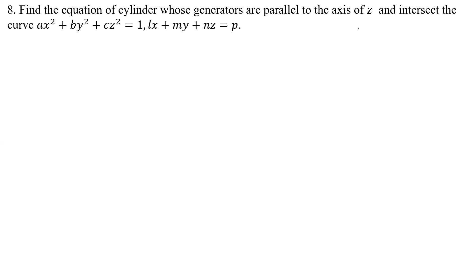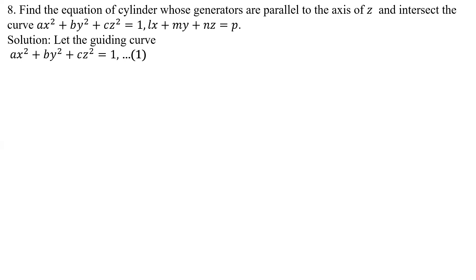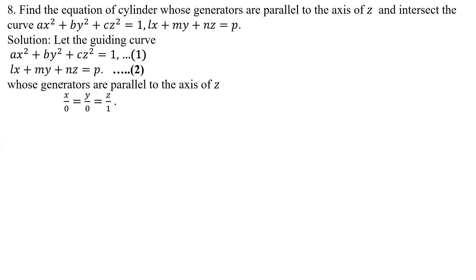In the previous problem, direction ratios were given. Here, the generators are parallel to the axis of z, which means the direction ratios (DR) are 0, 0, 1. The generators intersect the curve Ax² + By² + Cz² = 1 and the equation of the plane. These are the guiding curve. Let us start.